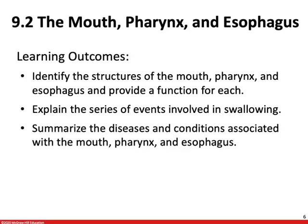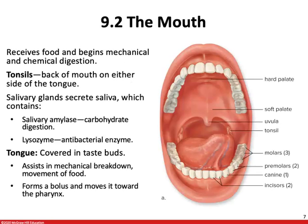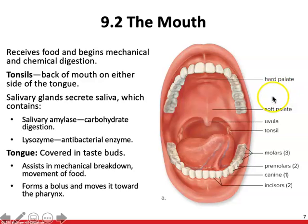Next up, we're going to look at the beginning stages of the digestive system: the mouth, pharynx, and esophagus. We're going to start off with the mouth, which is just the oral cavity and everything found within.